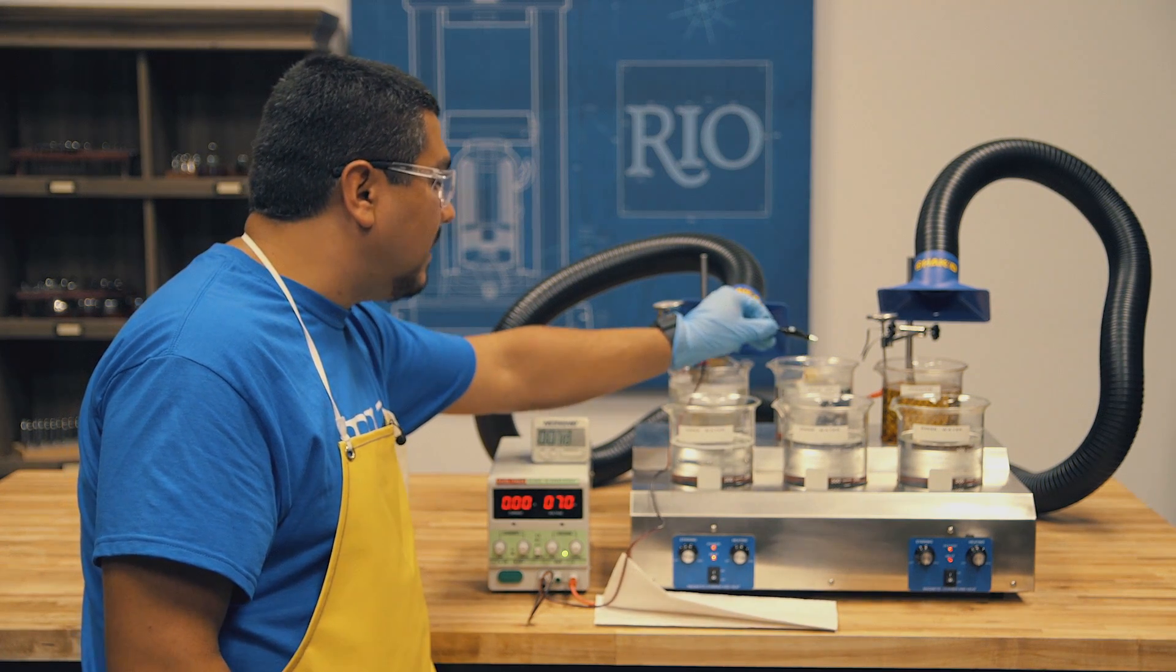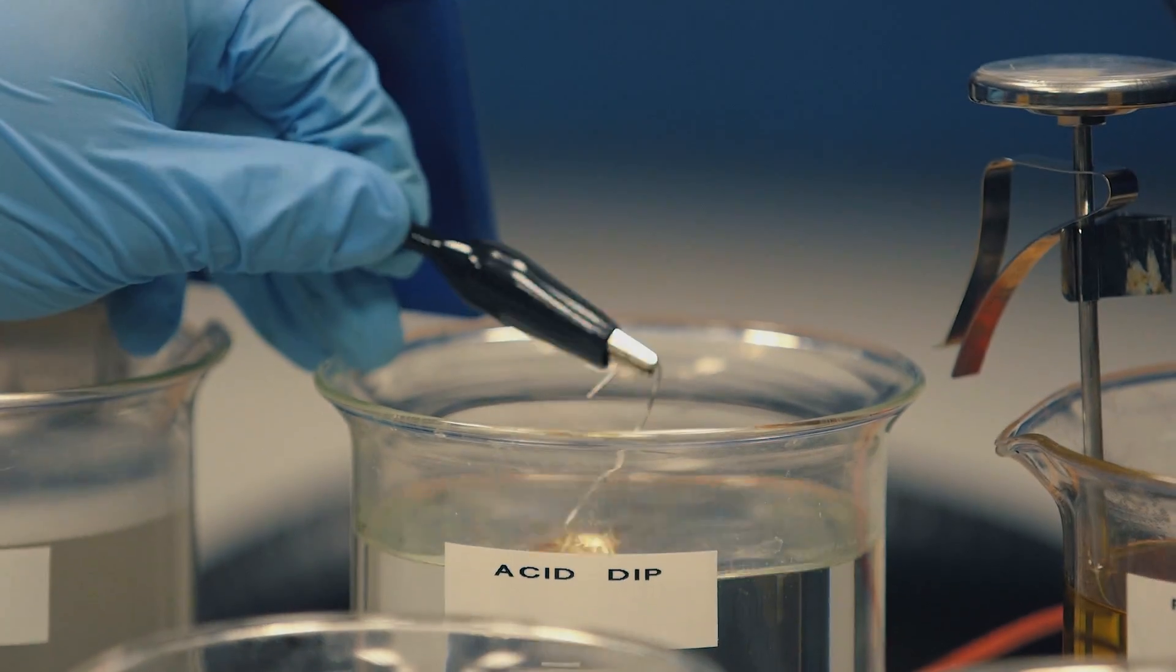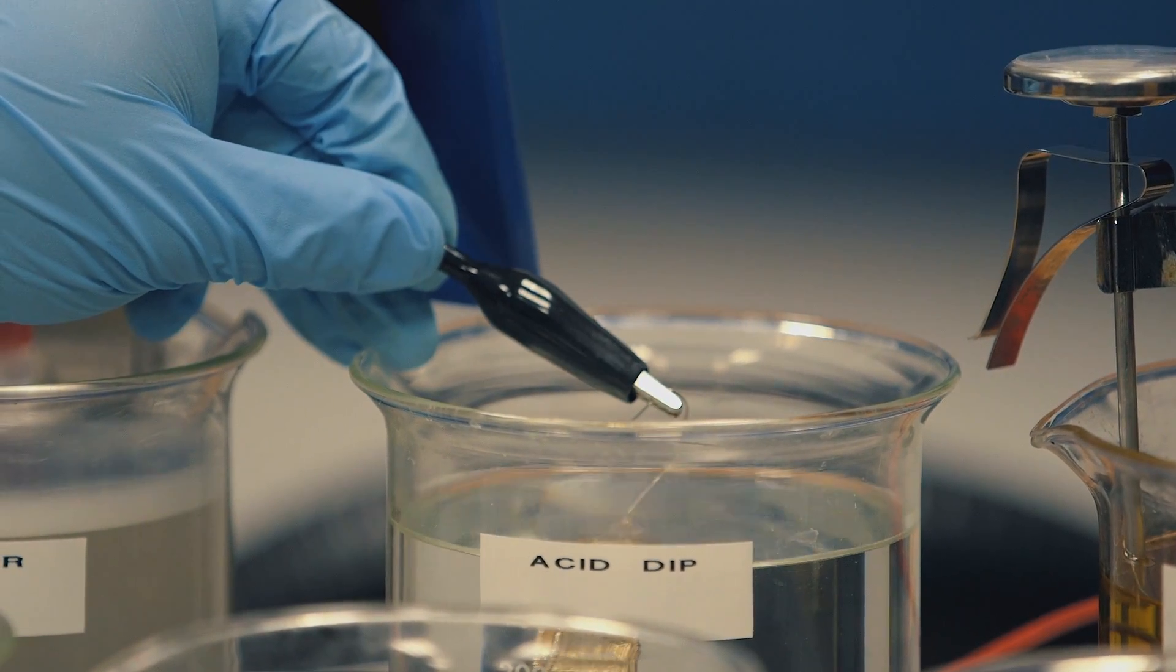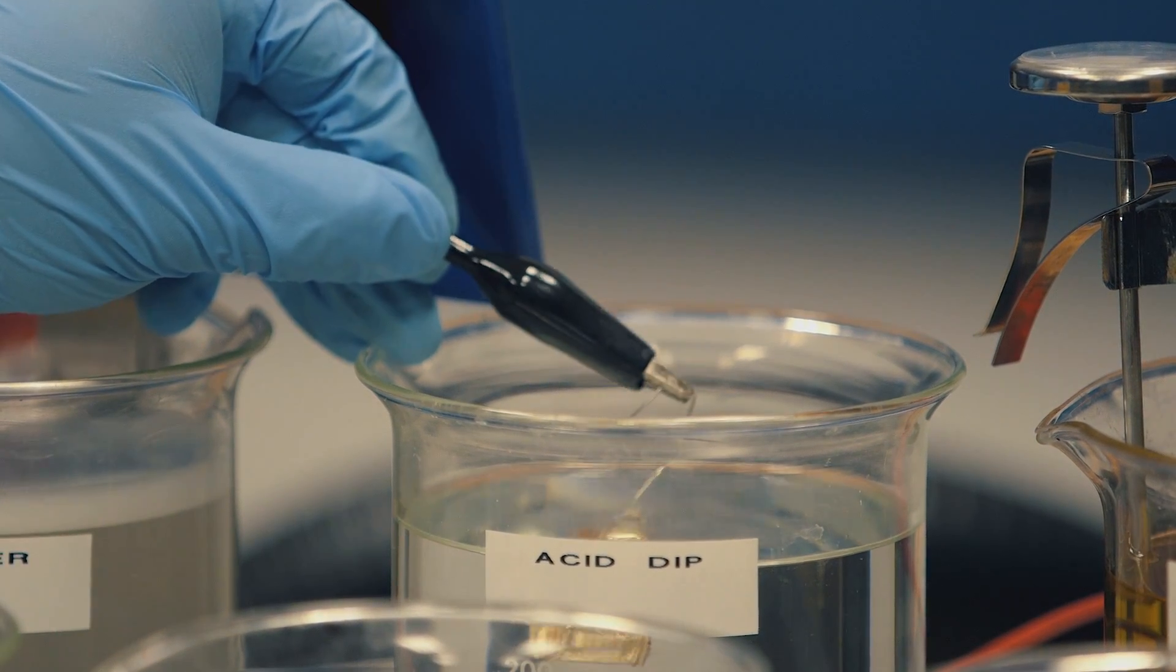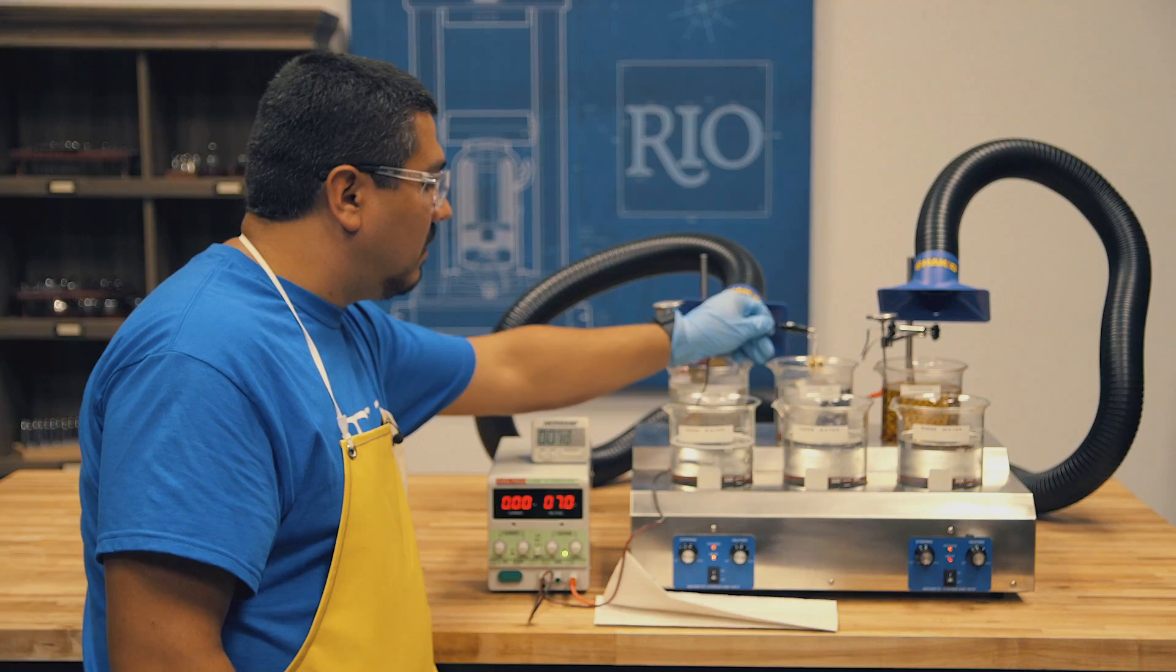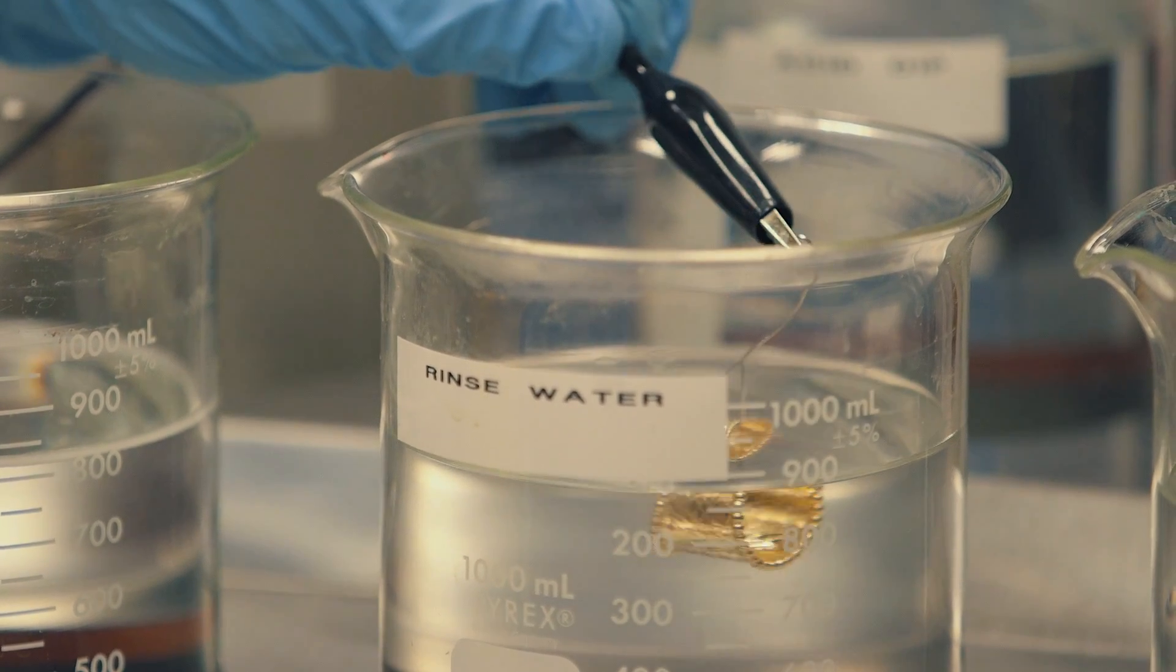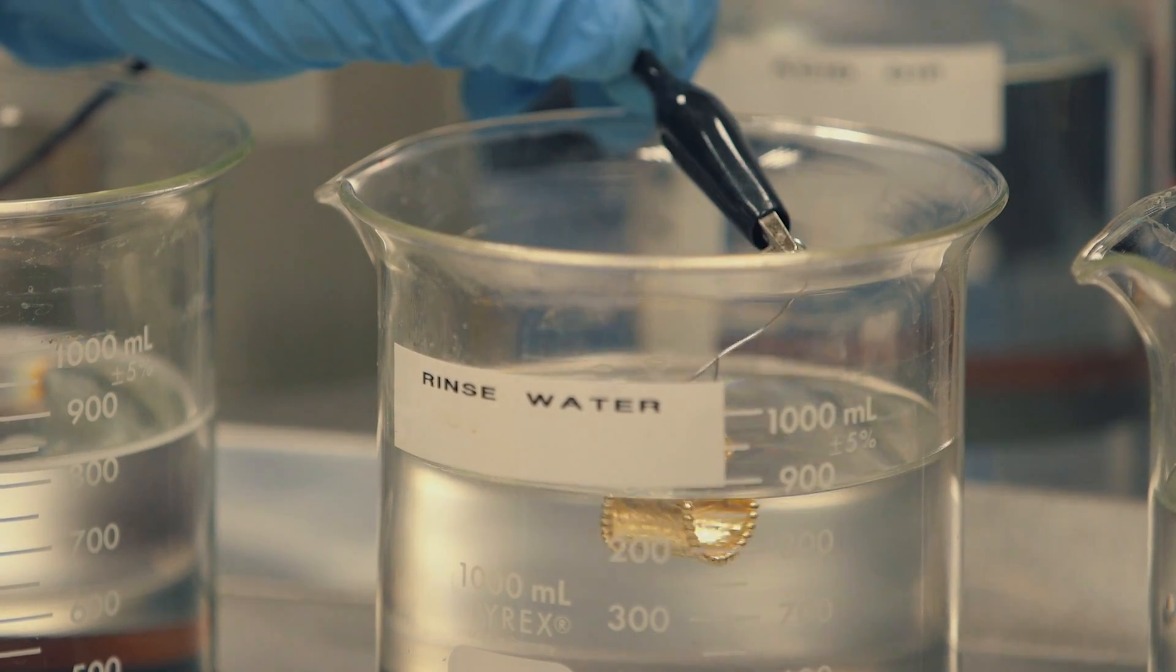Now we go into our acid dip rinse. We are going to acid dip neutralize for 30 seconds. This neutralizes any electro cleaner on the surface and prepares the surface of our metal for plating. After acid dipping, we're going to rinse in distilled water for 30 seconds. This removes the excess acid dip.